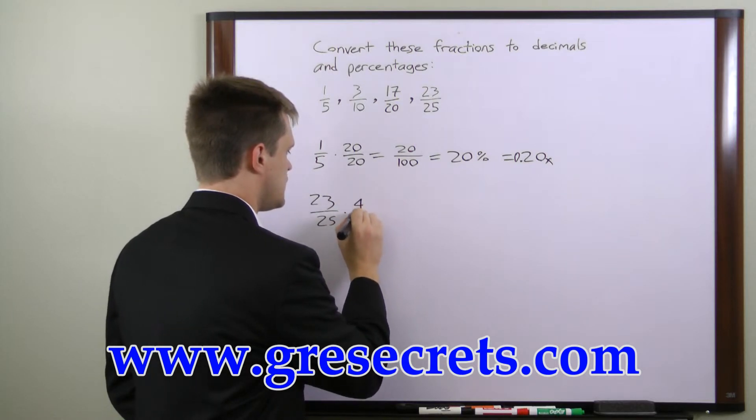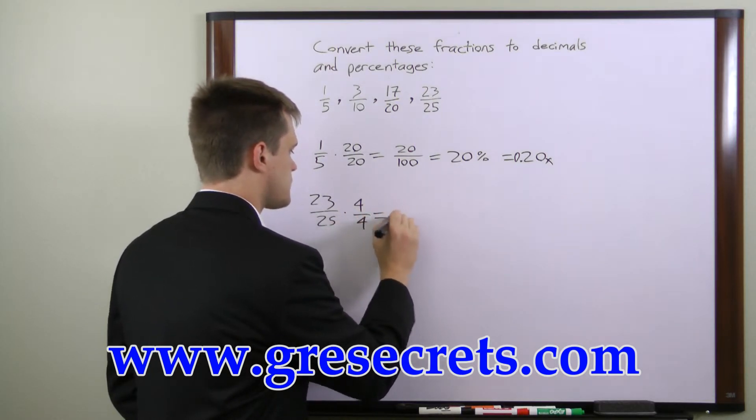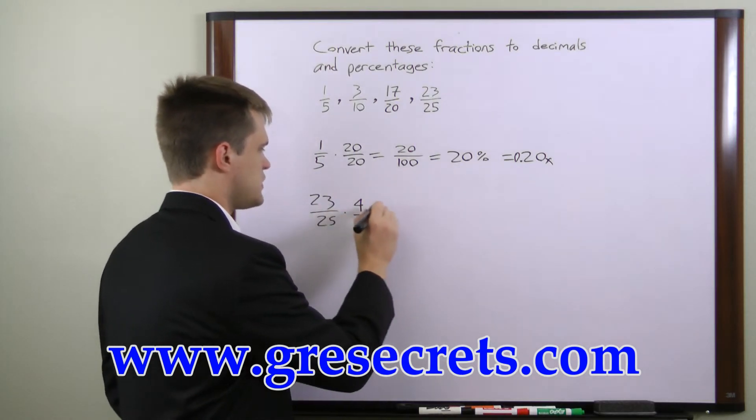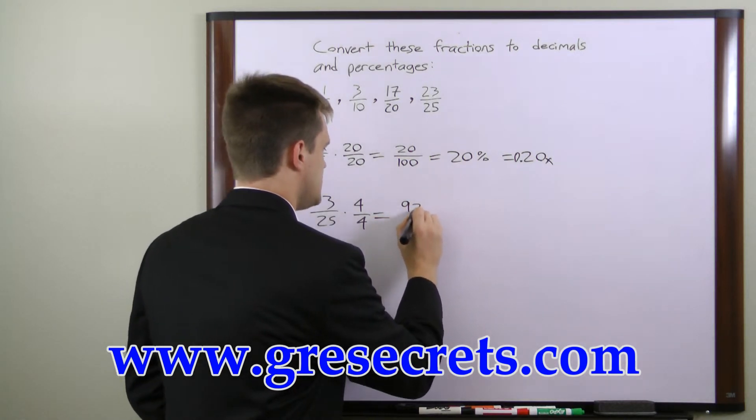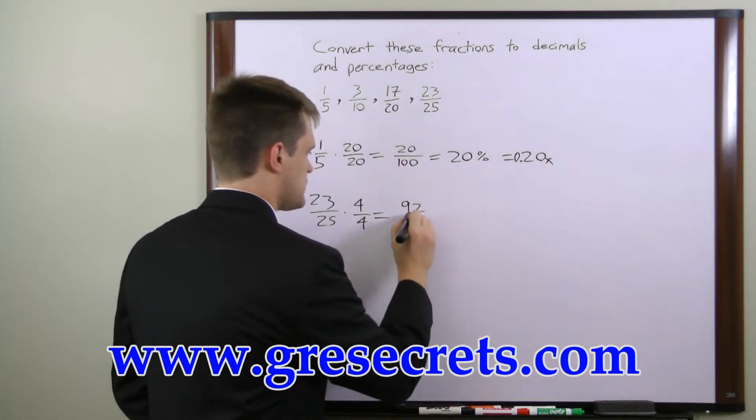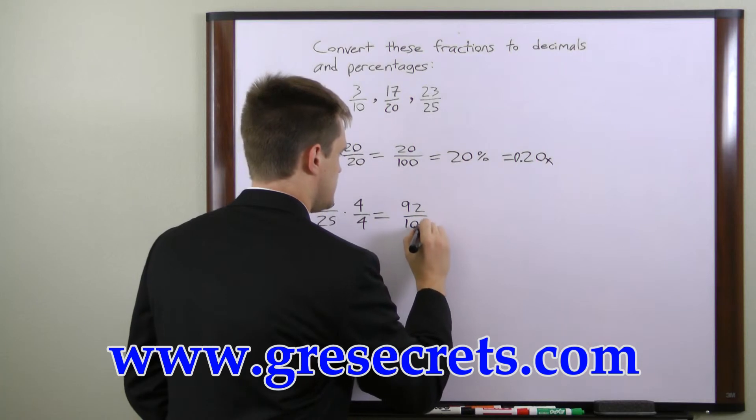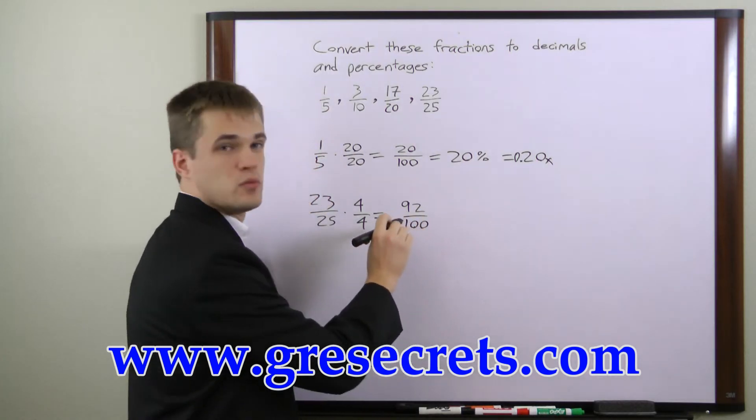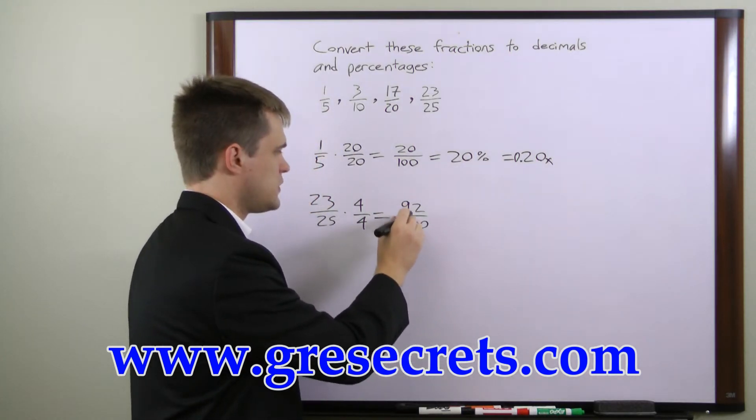So 23 over 25 times 4 over 4 is equal to 23 times 4 is 92. 25 times 4 is 100. So we've got it in our form we need, 92 over 100.